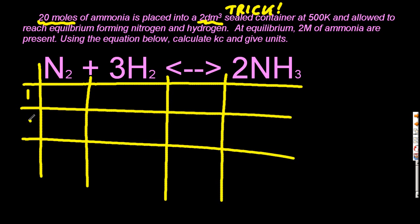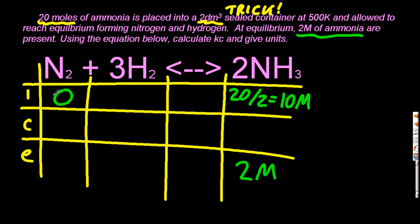Let me do my ICE table - initial, change, and equilibrium concentrations. First, my concentration at the beginning for ammonia is 10 molar, and at equilibrium it's 2 molar. There's nothing about nitrogen or hydrogen, so I'm going to put zeros in those boxes initially.